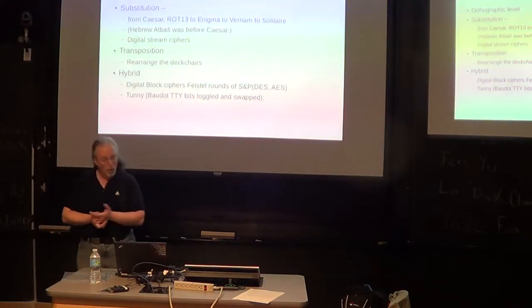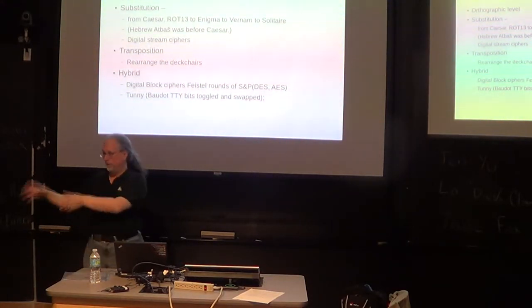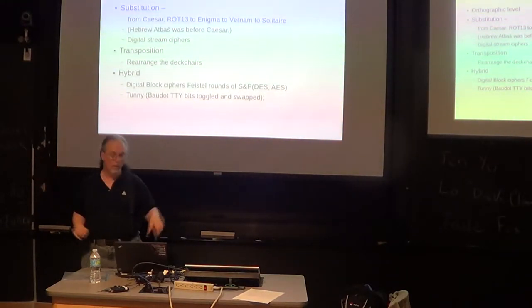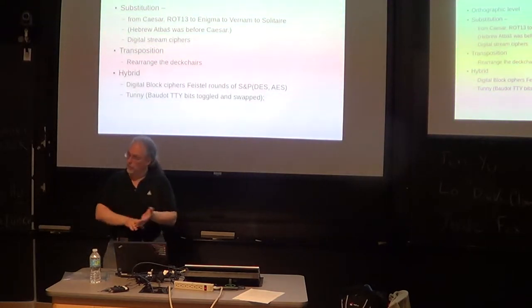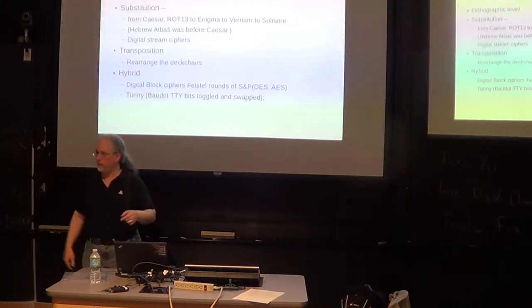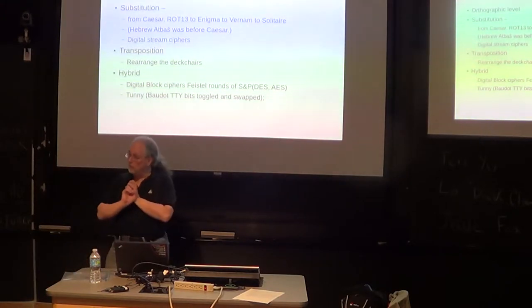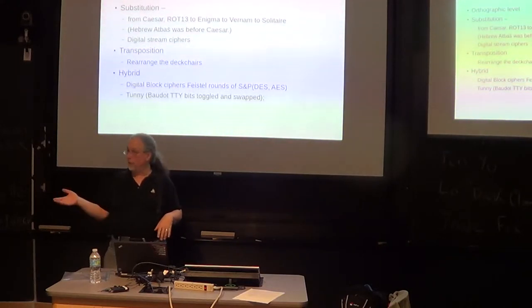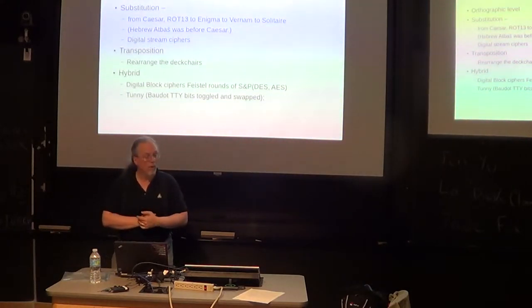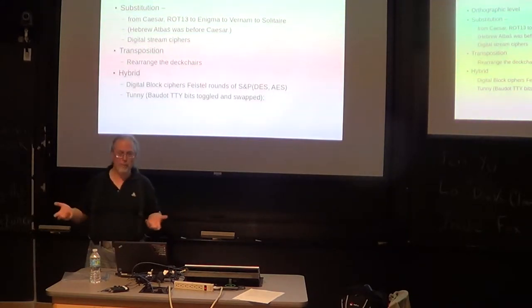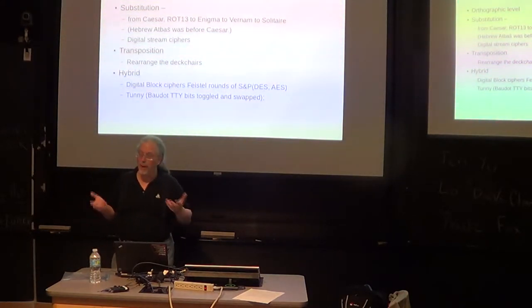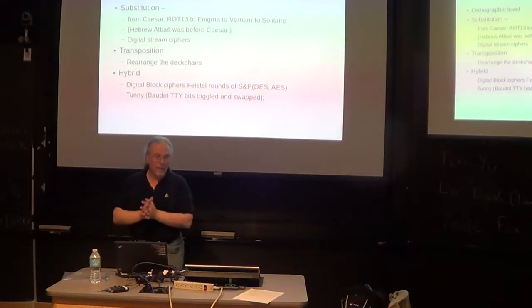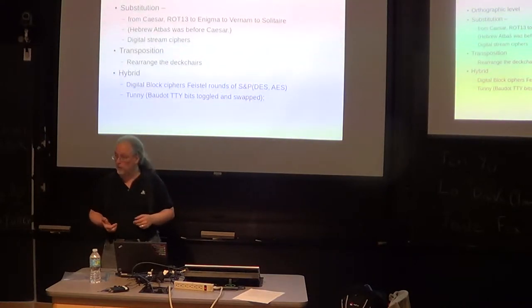Ciphers are what we mostly know about. That's where you take a letter or two or three, replace it with a letter or two or three. Not necessarily one to one there. Your Caesar cipher, go three down the alphabet. We've got ROT 13, we all remember that one. The Enigma, Fernet, Solitaire from the book, all ciphers. Now why does Caesar get precedence? The Hebrew Atbash system is older. Same cipher. And our digital stream ciphers are basically substitution ciphers.